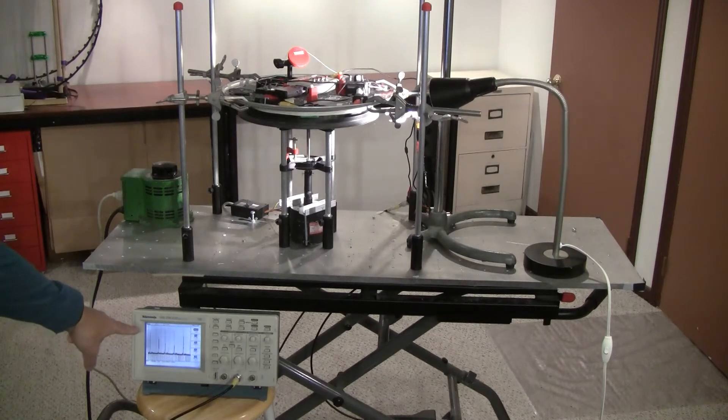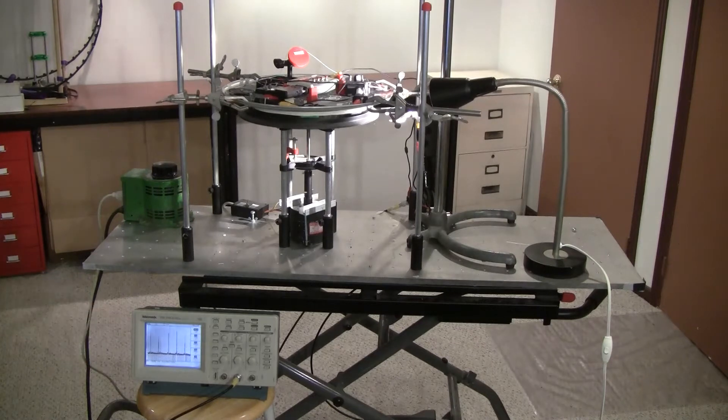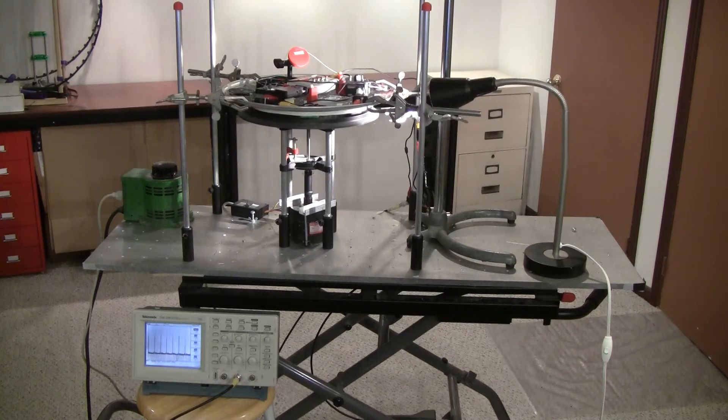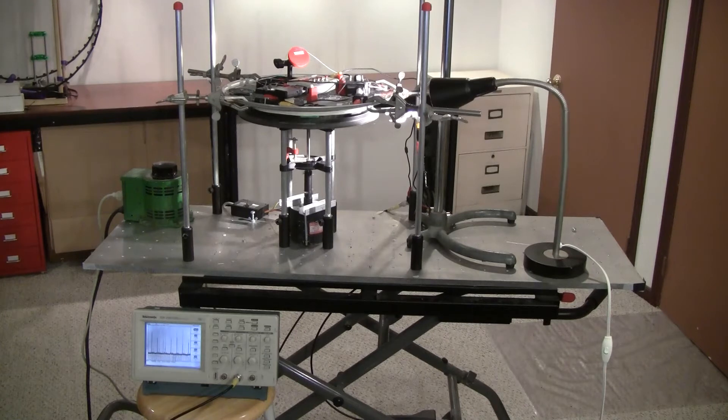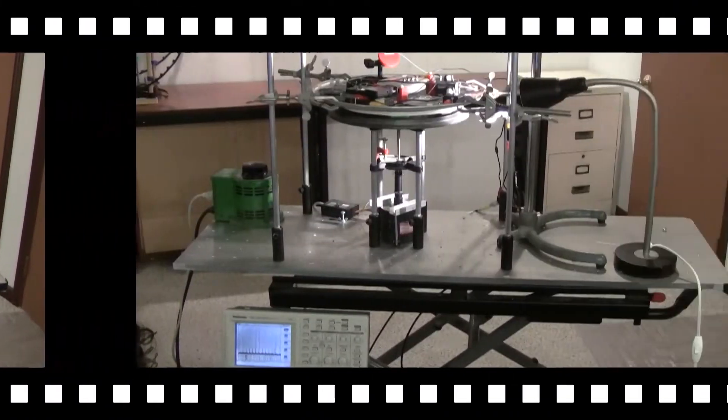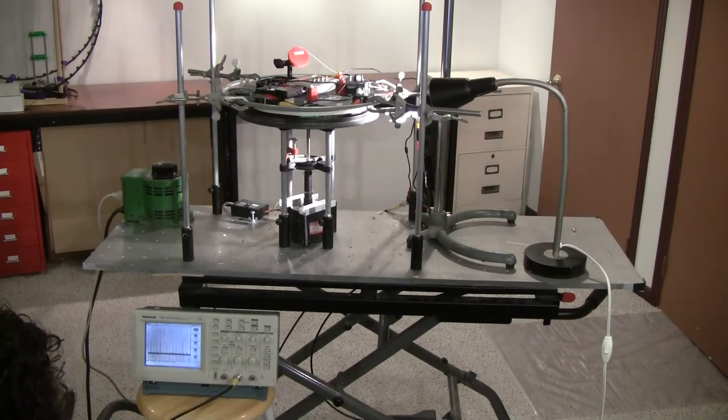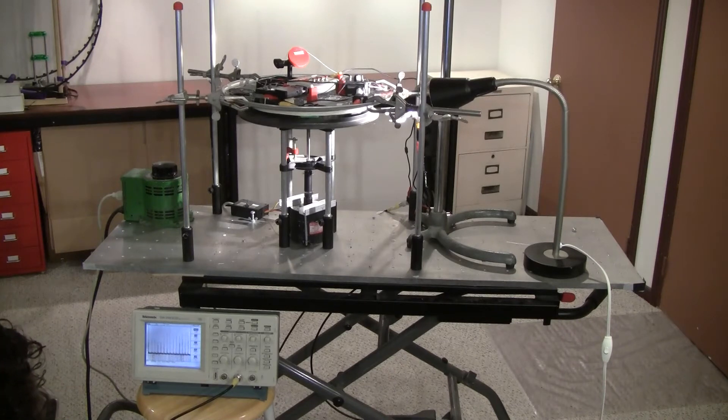You can see the signal coming through here, which gives us our RPM level. We're coming up to about 600 RPM, and let's just spin up to speed. And now we're approaching 900 RPM.